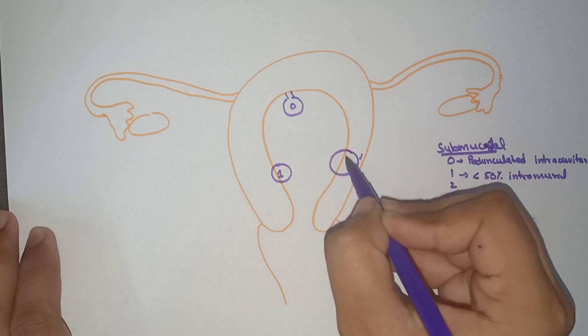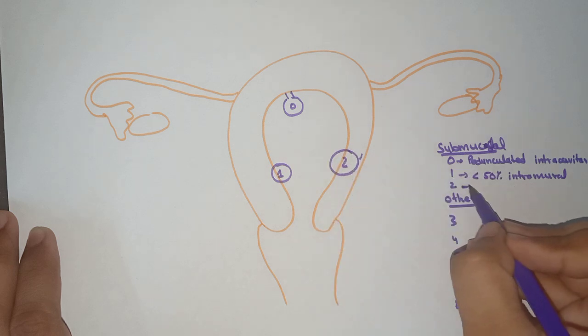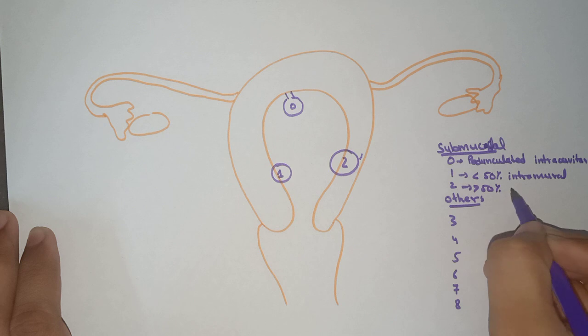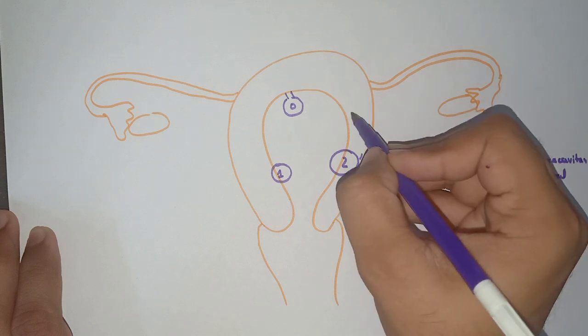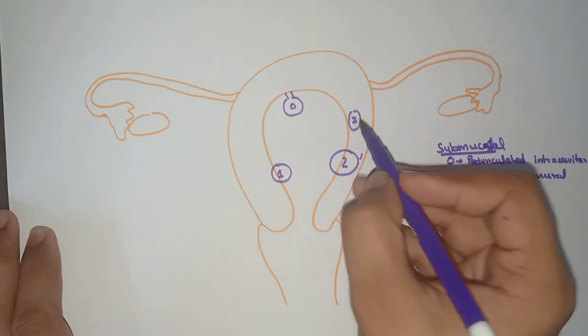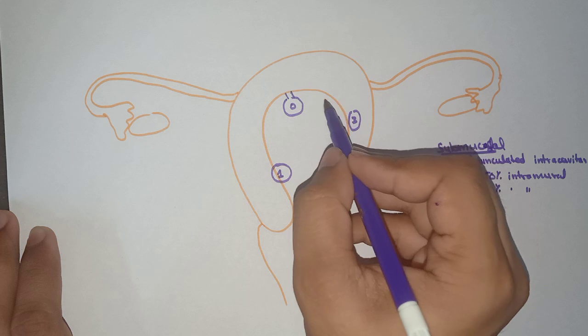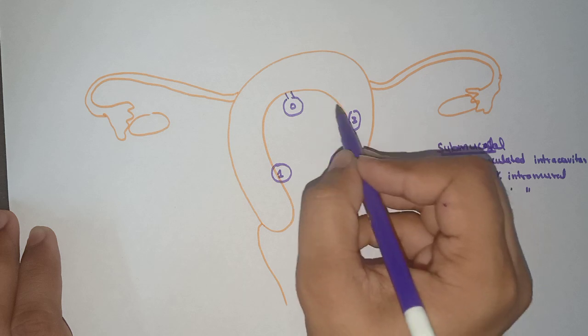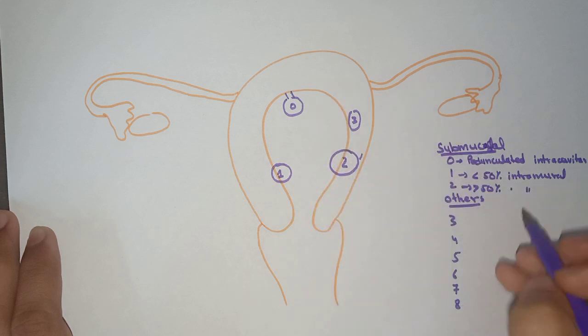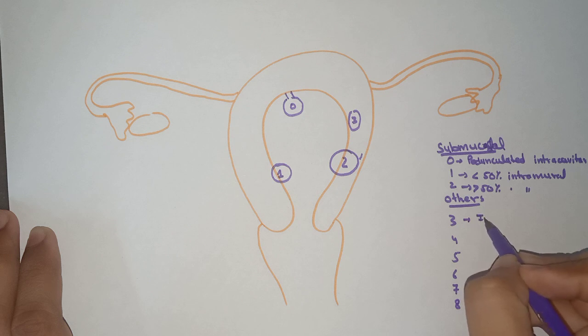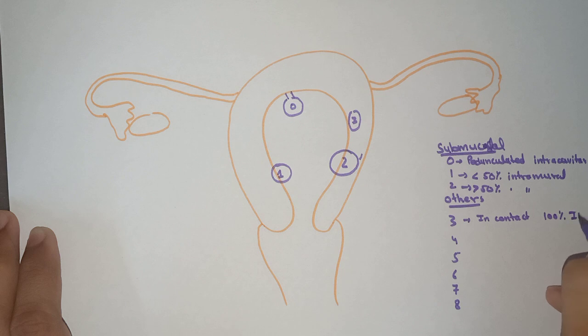Now coming to Type 3. Type 3 is intramural but in contact with the endometrium - in contact with endometrium and 100% intramural.